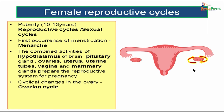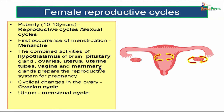The cyclical changes in the ovary are called the ovarian cycle, and the cyclical changes in the uterus are called the menstrual cycle. Each reproductive cycle includes control by the hypothalamus over the pituitary gland, which in turn controls the ovaries, uterus, uterine tubes, vagina, and mammary glands, resulting in a fruitful pregnancy. If pregnancy does not happen, the cycles repeat.